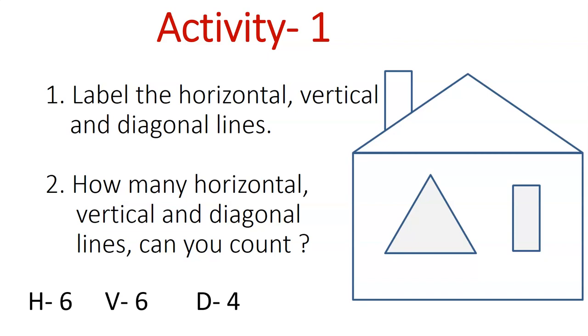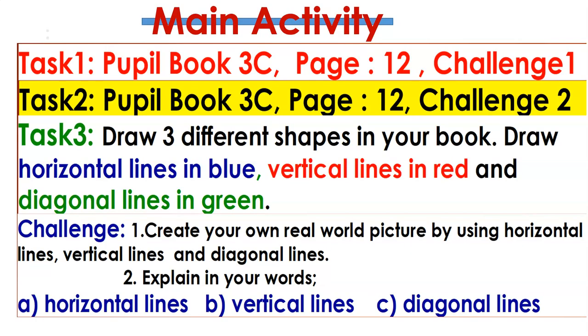Now let's have our main tasks. For our main activity, there are three tasks found in your pupil book. Task one: page 12, challenge one. Task two: page 12, challenge two. And task three: draw three different shapes in your book.